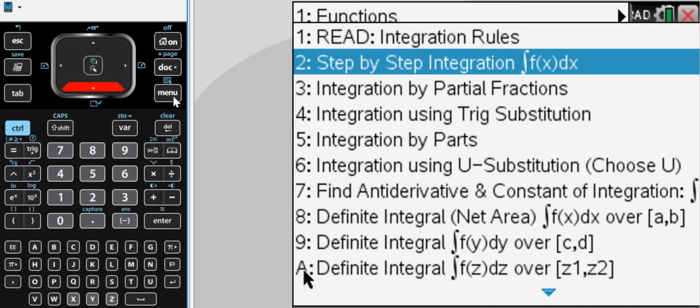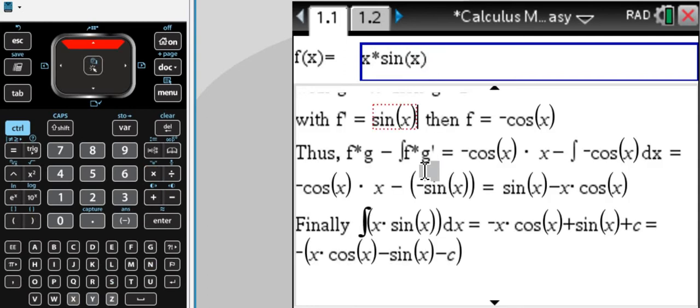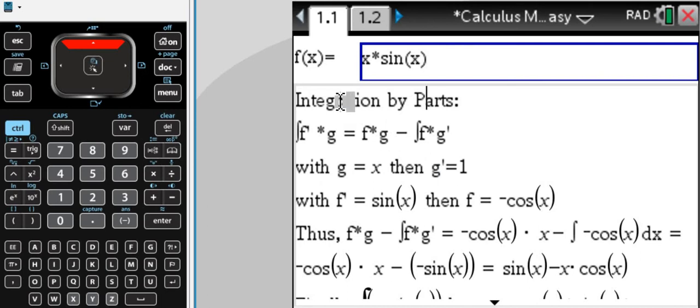If you are not sure, you can just do step-by-step integration and just type in, for example, x times sine of x. And of course, Calculus Made Easy will automatically find the correct integration method, which is integration by parts, which we just saw.